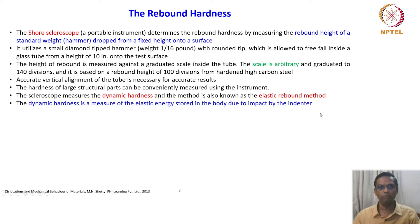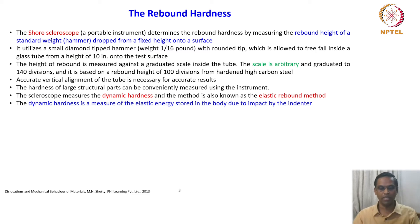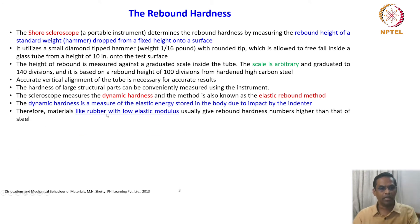The dynamic hardness is a measure of elastic energy stored in the body due to impact by the indenter. For example, if you take a big polymeric sheet — typically used in a variety of applications, even as a shock absorber in big foundations — the hardness of this material is crucial and it has a specific Shore hardness. All polymeric material, semi-crystalline material, and rubbery material use this kind of hardness. Therefore, materials like rubber with low elastic modulus usually give rebound hardness numbers higher than that of steel.